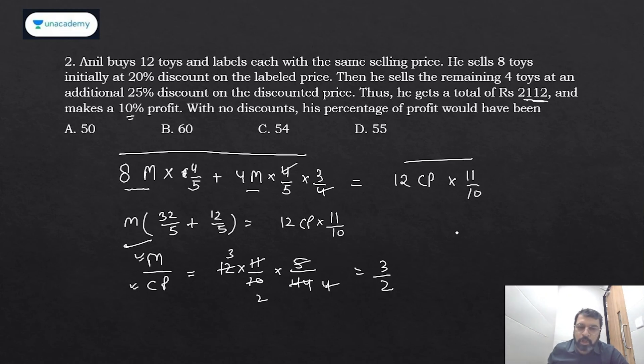So if cost price would have been 2, mark price would have been 3. The question was: with no discount, his profit percent would have been? If no discount is there, my cost price is this, mark price is this, and this will be your selling price also because there is no discount. So obviously we have a profit of 1 over 2, that is 50%.